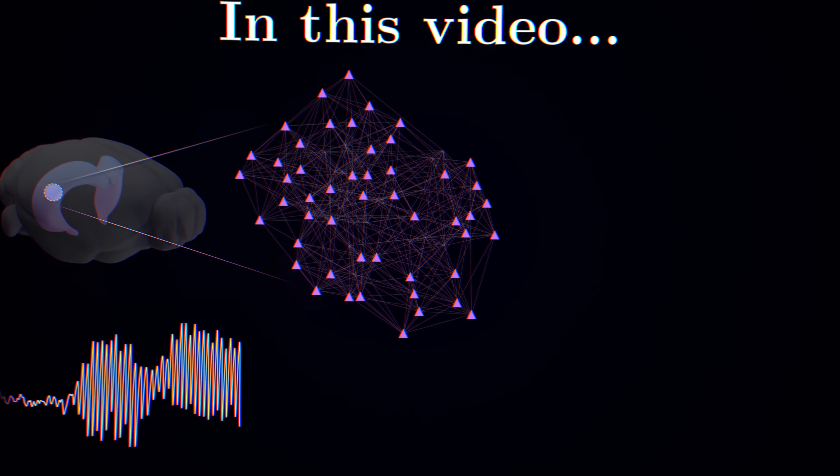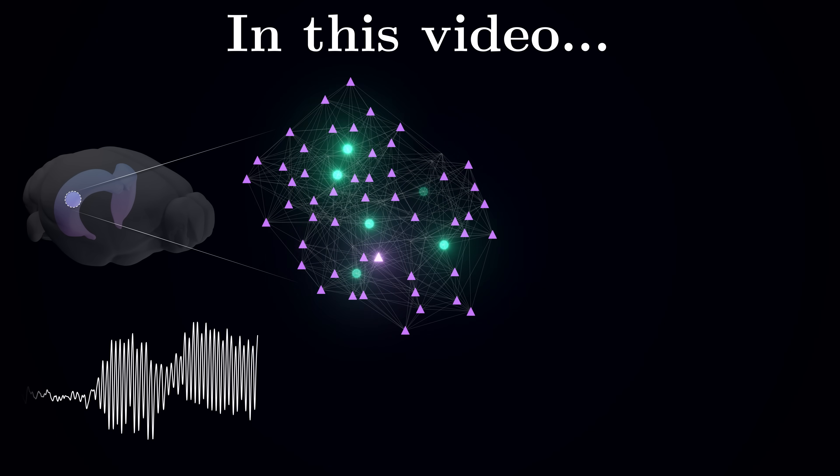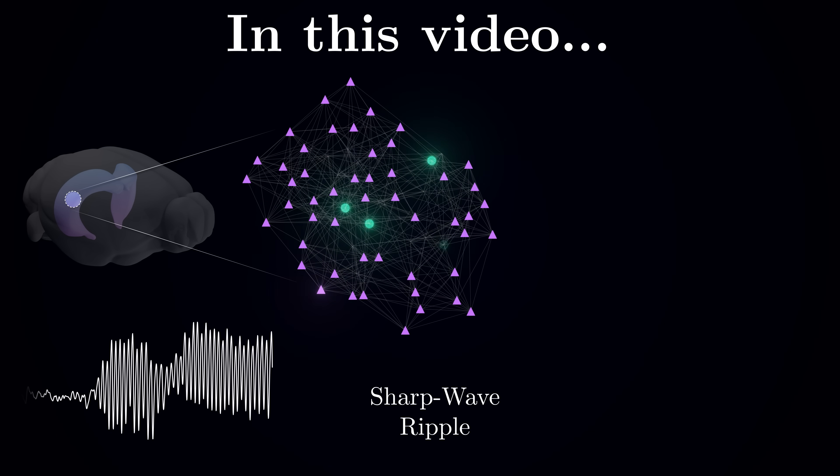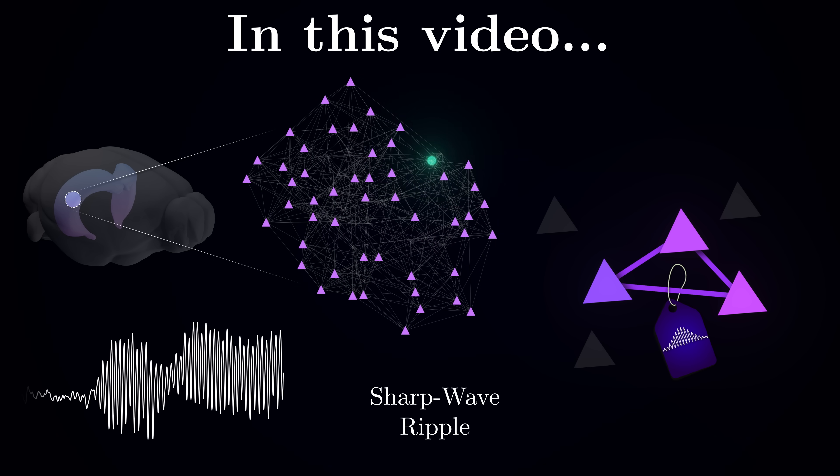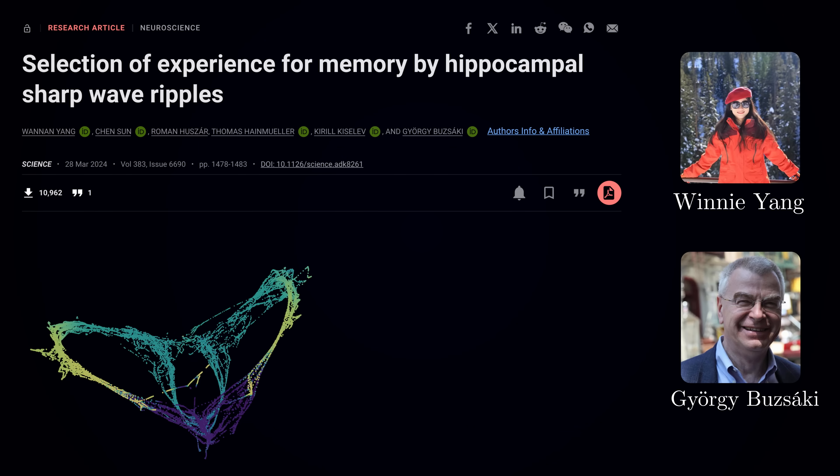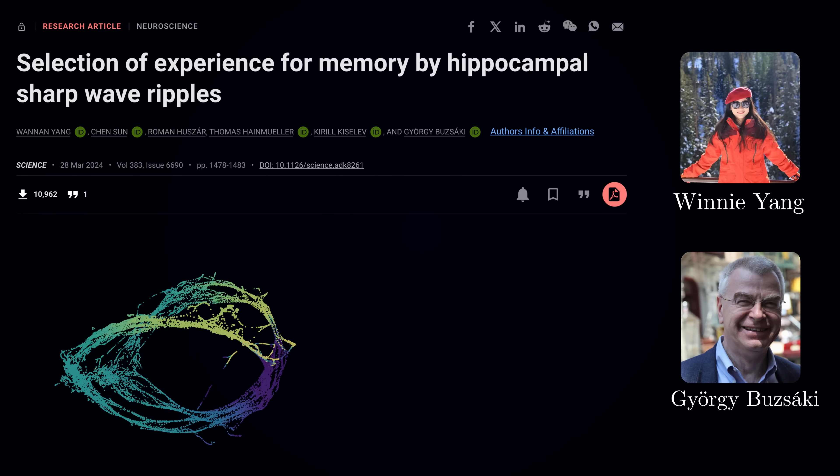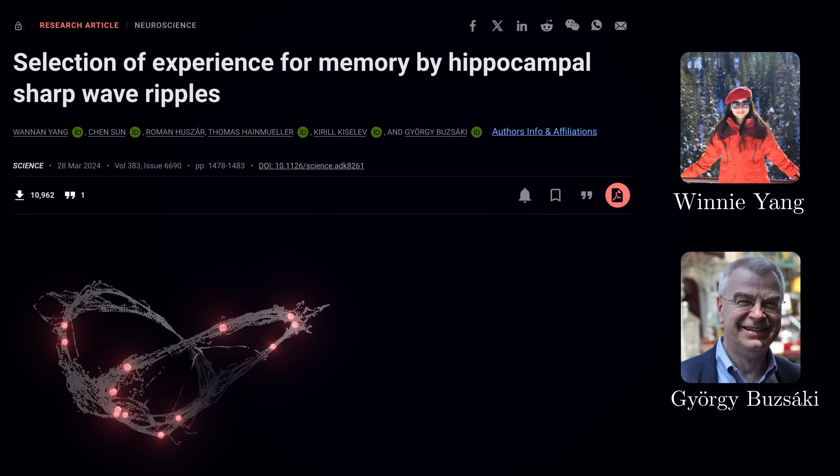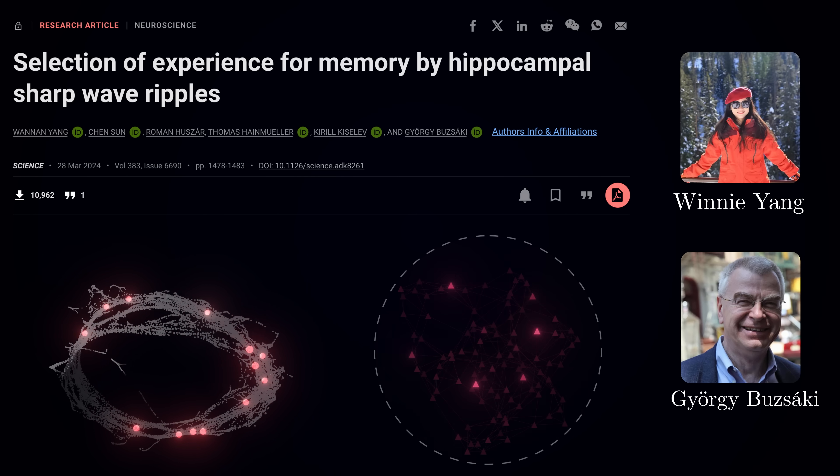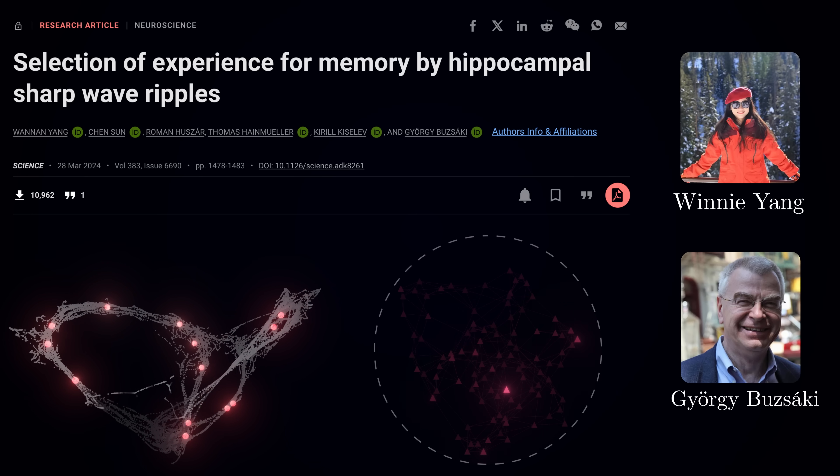Recent research has unveiled an elegant solution – how a pattern of neural activity, called a sharp wave ripple, acts as your brain's internal bookmarking system. Today, we are exploring an innovative study published in Science earlier this year that shows how these events help tag important memories during the day and ensure they get properly stored while you sleep.